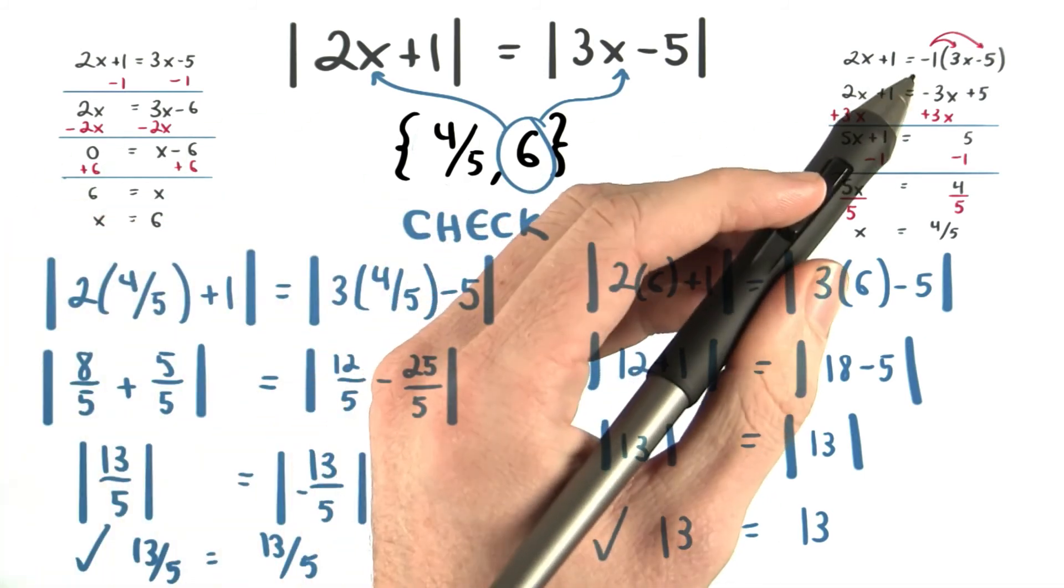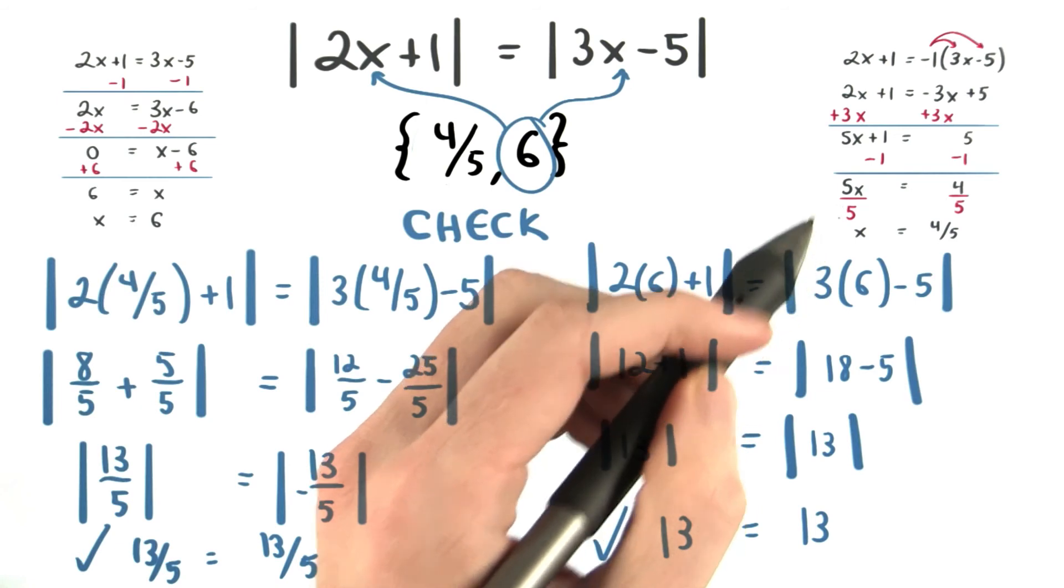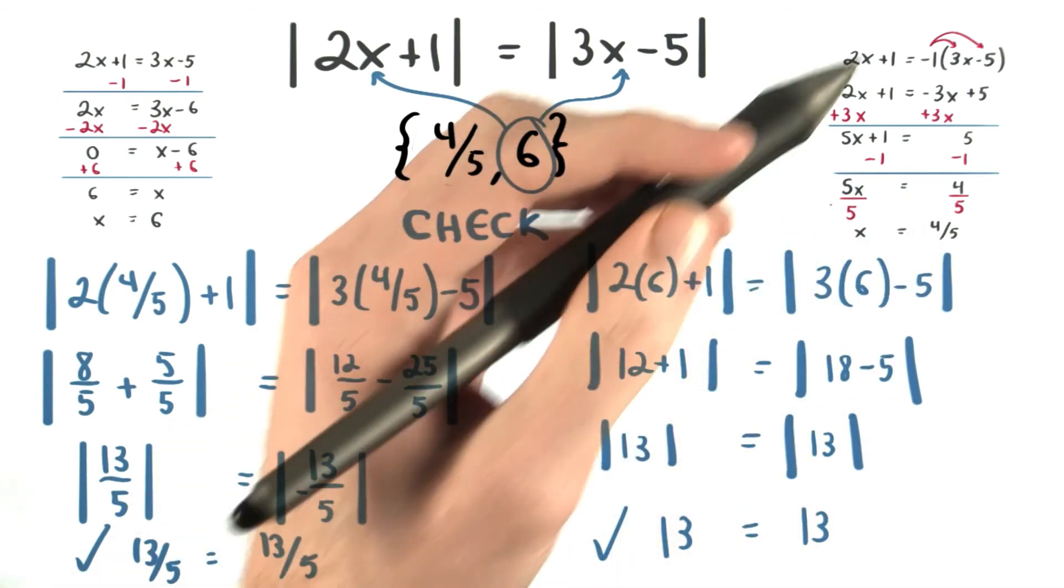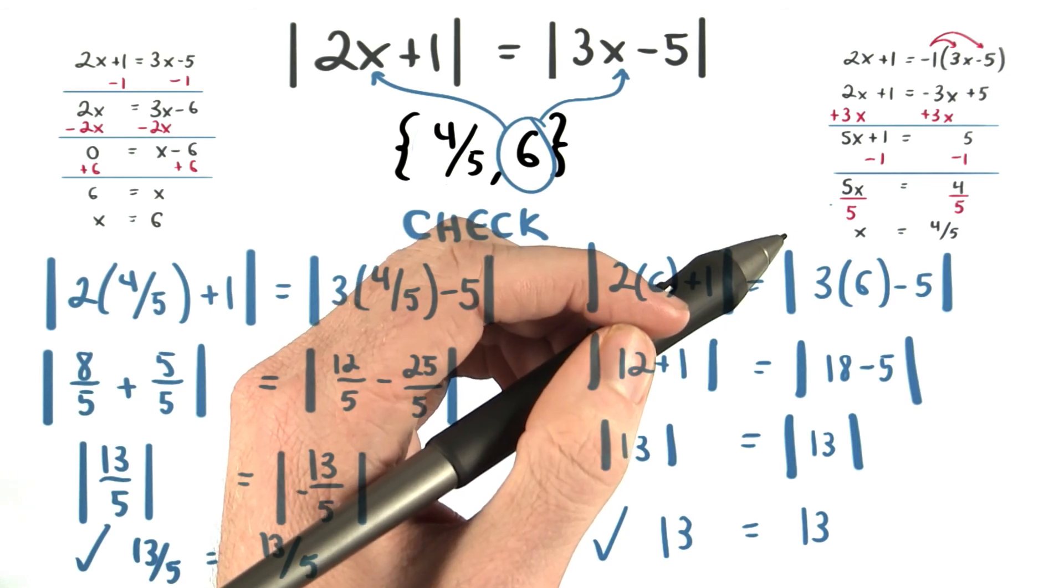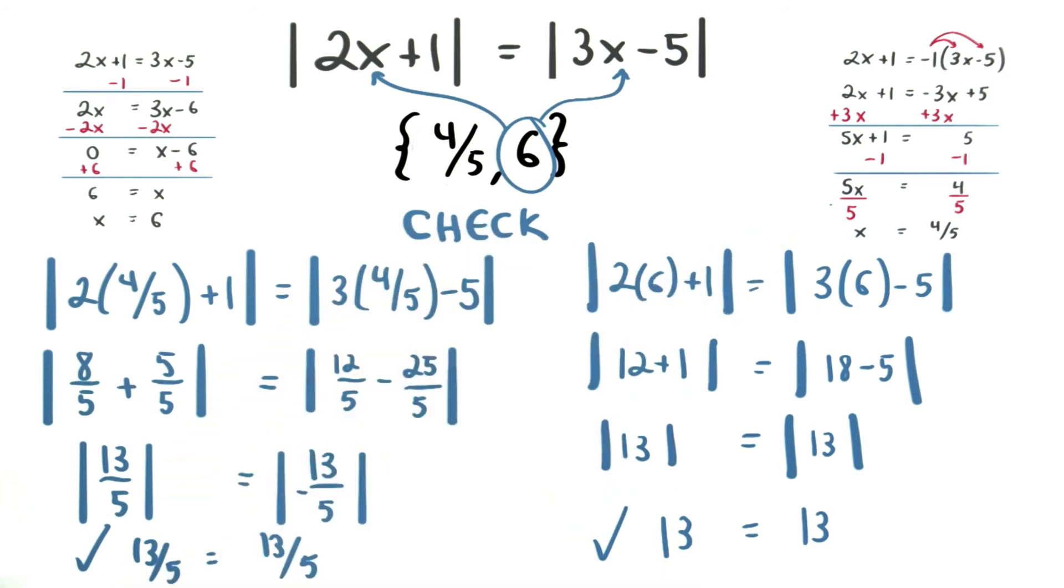You might have gotten stuck with the negative sign when distributing, or perhaps with this fraction. Think about the types of mistakes you might be making, if you are making any, and try and write them down. This would be a good reference for you later.